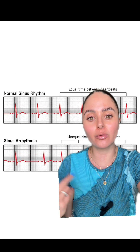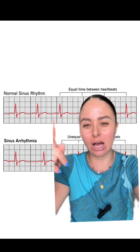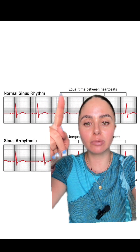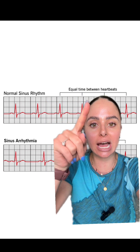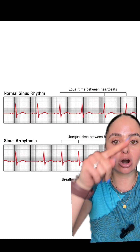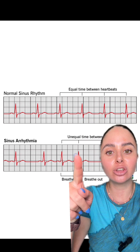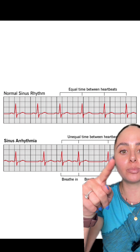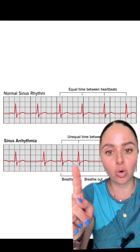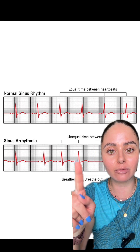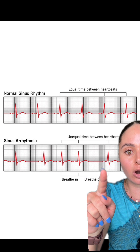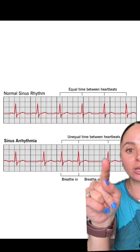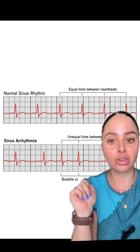A sinus arrhythmia is a normal variation of normal sinus rhythm. In a normal sinus rhythm, you should have equal time between heartbeats, and in a sinus arrhythmia you're going to have unequal time between heartbeats. However, you should still have a normal P wave with your QRS, even though you see this little pause — normal P wave with your QRS.